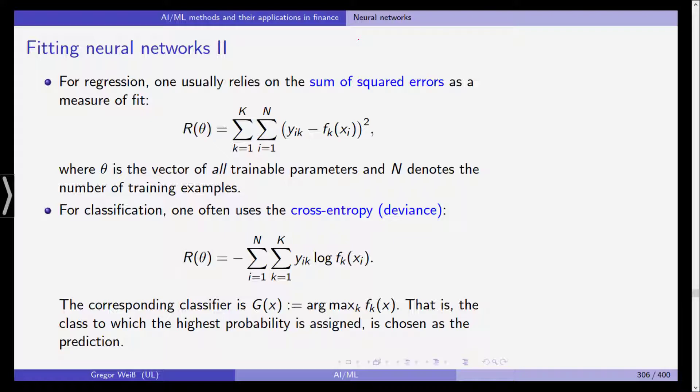For classification, you usually use the so-called cross-entropy or deviance, which is you take your predictions f_k based on the features, you take the logarithm, you multiply it with the observed values for the response y_ik. Usually this will be 1 or 0, and thus you get the errors, and then you also add it all up and take the negative of this. Now the corresponding classifier in this case is usually the argmax function. That is, the class to which the highest probability is assigned is chosen as the prediction.